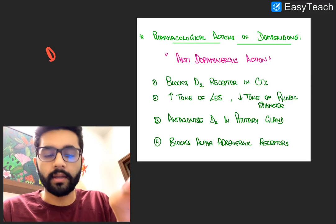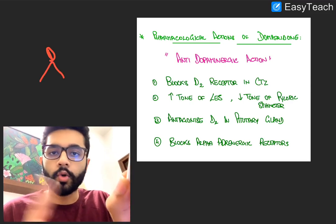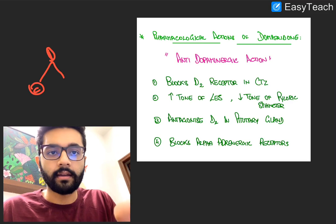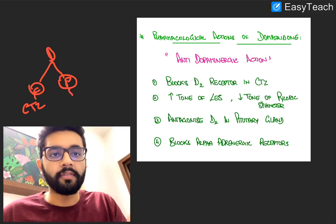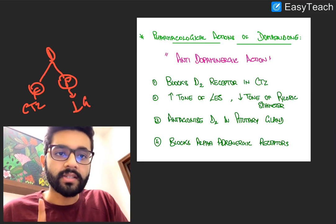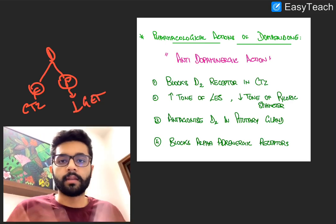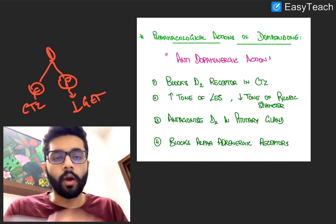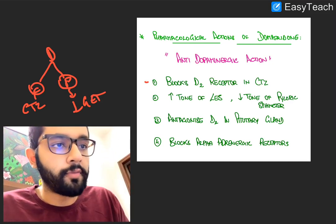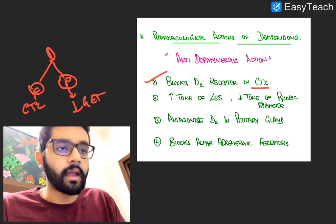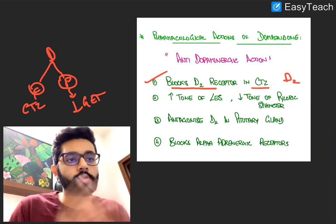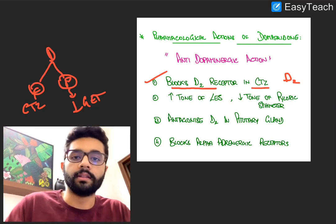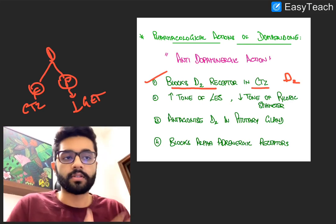Domperidone is an anti-emetic drug that prevents nausea and vomiting with a two-pronged approach — it acts at the center and the periphery. Centrally, it acts directly on the chemoreceptor trigger zone or CTZ, which is responsible for nausea and vomiting. Peripherally, it reduces the gastric emptying time by facilitating gastric emptying. Centrally, it acts by blocking the D2 receptor, a type of dopamine receptor, thus blocking dopamine receptors in the CTZ of the CNS and preventing nausea and vomiting.